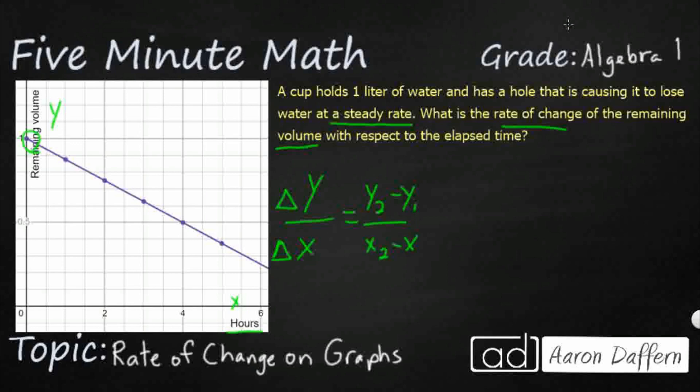So if we think of rate of change, it's just another way of asking for m. If we think of our slope-intercept form, y equals mx plus b. We even have our b right here. This is a y-intercept of 1. So all we need to do is find some points here. So let's start with our y-intercept of 0, 1. And it looks like we got a point right there. Four hours, we are at 0.5.